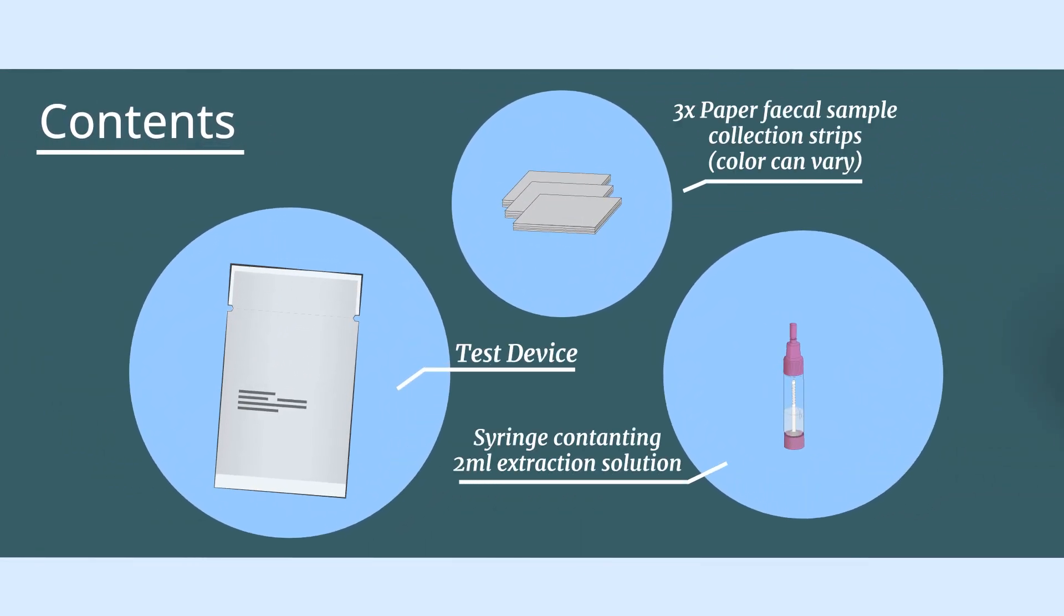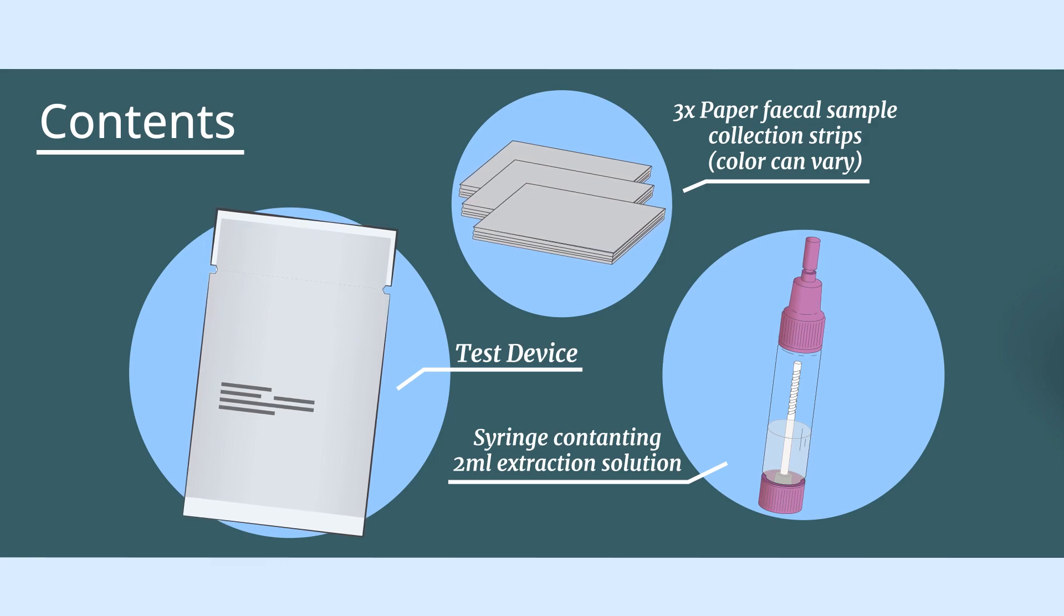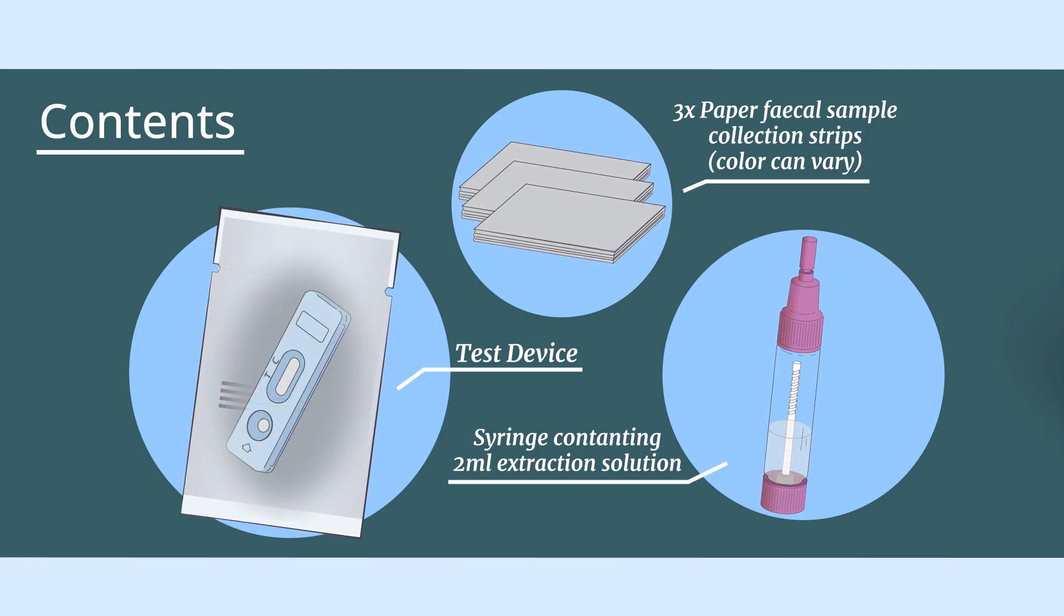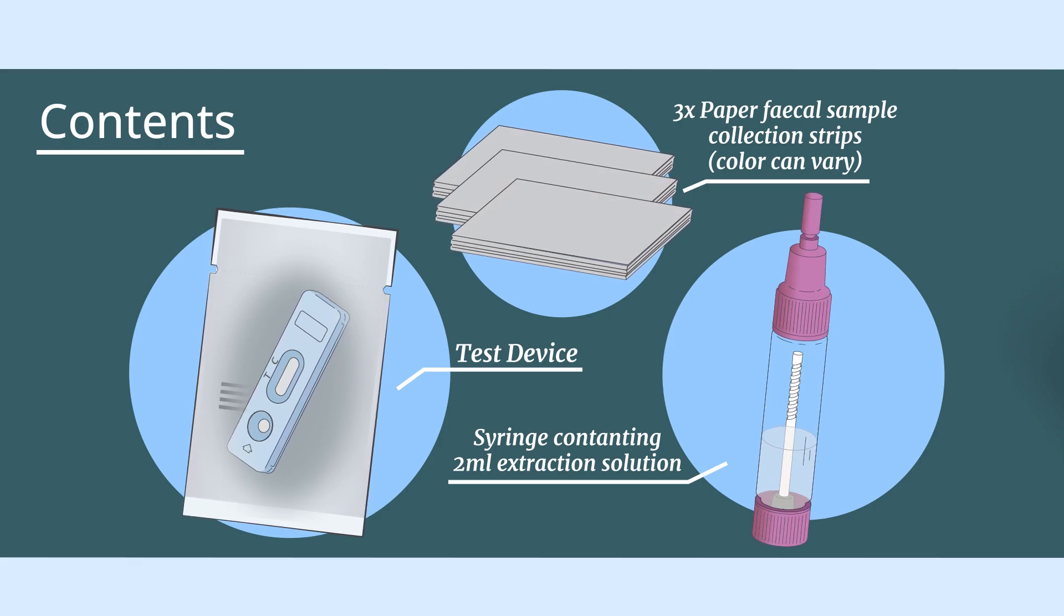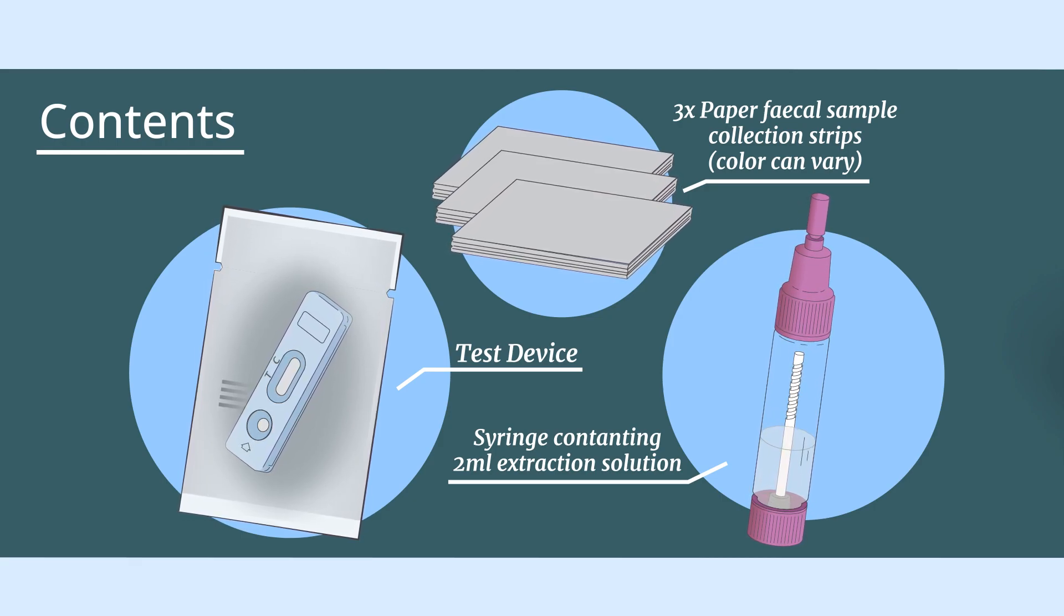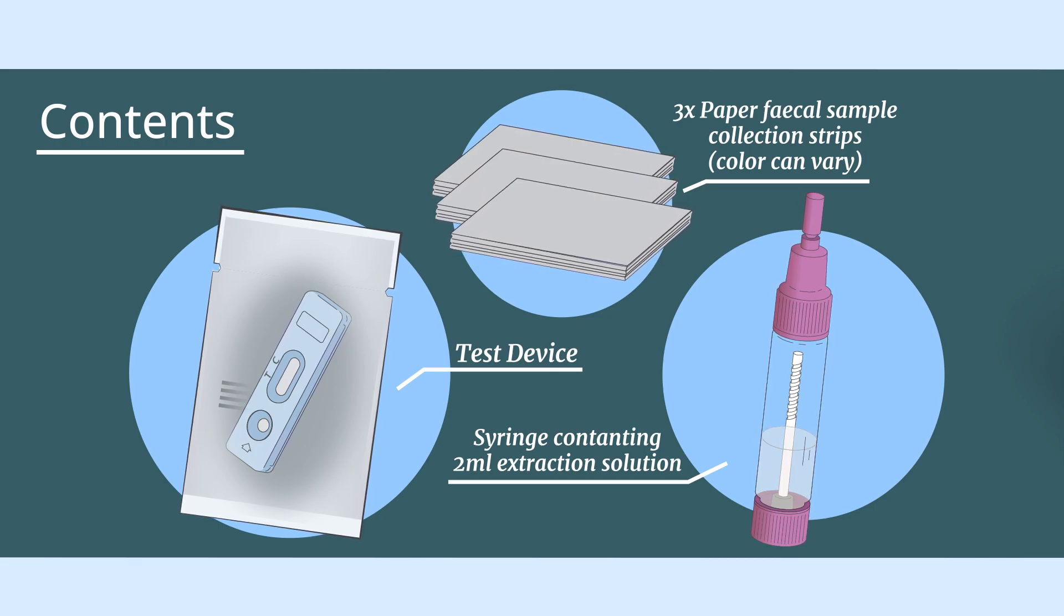What is inside the box? One sealed aluminum pouch containing one test device. The test should remain in the sealed pouch until use. Three paper fecal sample collection strips. One syringe containing two milliliters of extraction solution in a protective plastic bag.